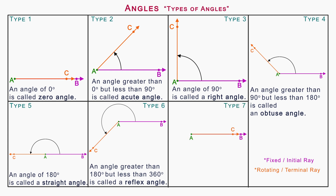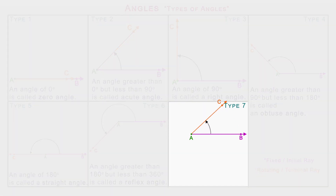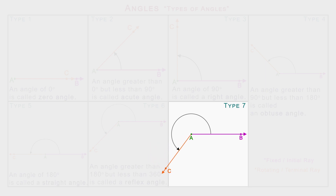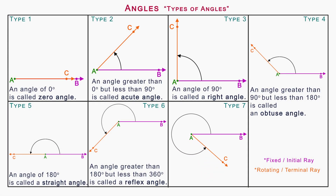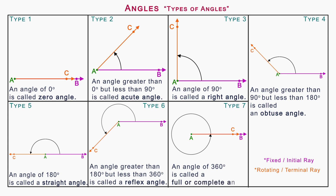Type 7: Full or complete angle. On rotating the terminal ray in anti-clockwise direction as shown on the screen, the angle formed is called a full or complete angle. An angle of 360 degrees is called a full or complete angle.